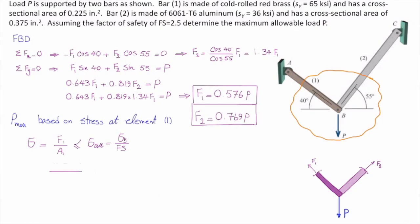Let me plug the values. F1 is 0.576 P. How much is the area of element number 1? It's provided. It's 0.225 squared inch. And the allowable stress in element number 1 is calculated from the yield stress in that element. The yield stress is 65 KSI. And the factor of safety is 2.5. And here, we have one equation from which we can determine how much is P.